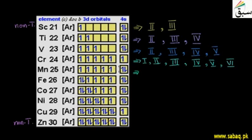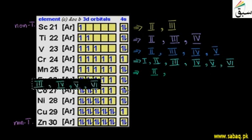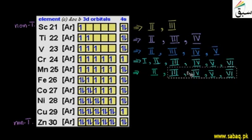Now we have manganese. Manganese can show oxidation state +2, then +3, +4, +5, +6, and then +7. So the seventh oxidation state also shows up in manganese, giving it the widest range of oxidation states in the first transition series.